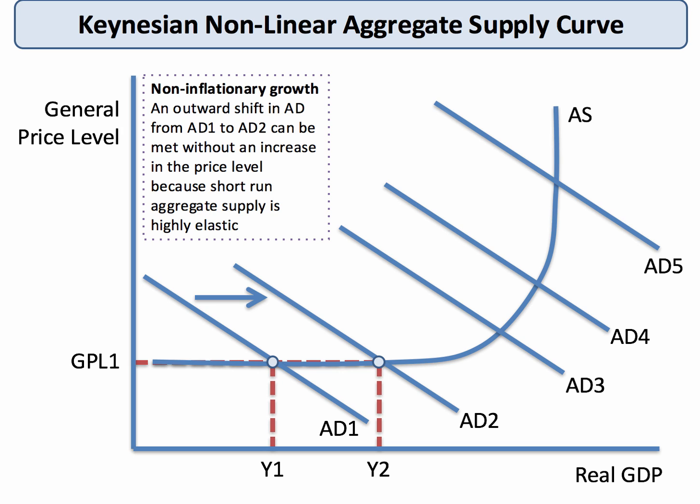When the economy is operating with plenty of spare capacity, for example coming out of recession, you'd normally expect the aggregate supply curve to be fairly elastic. But look further to the right and see what happens as aggregate demand continues to increase to much higher levels — the aggregate supply curve now starts to become inelastic.